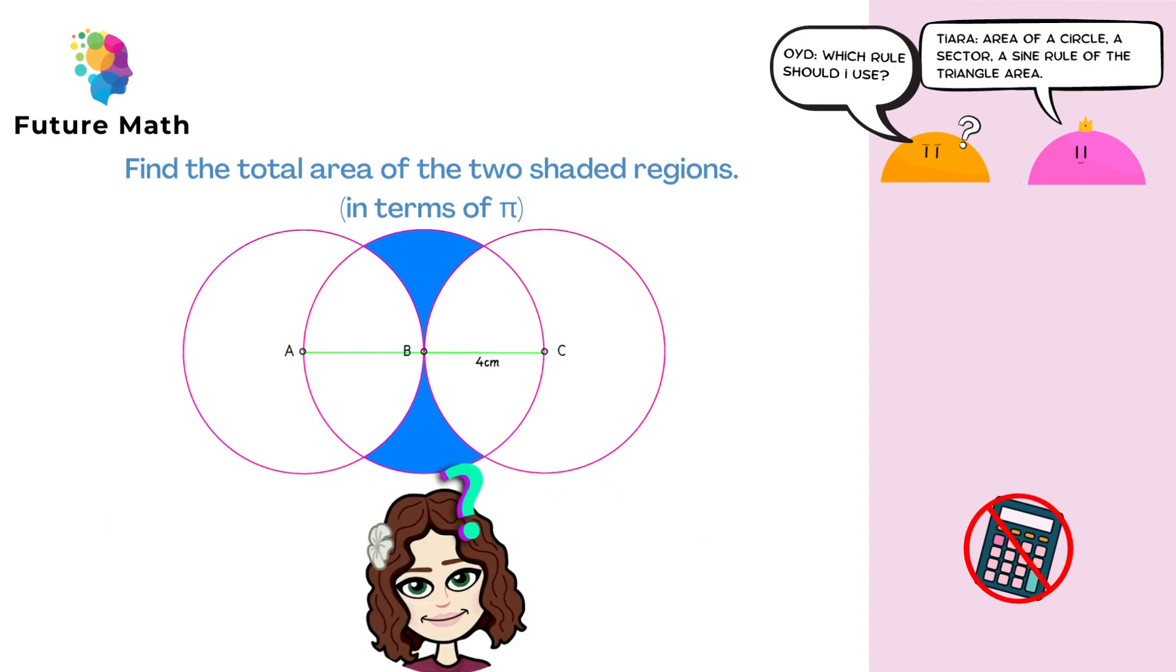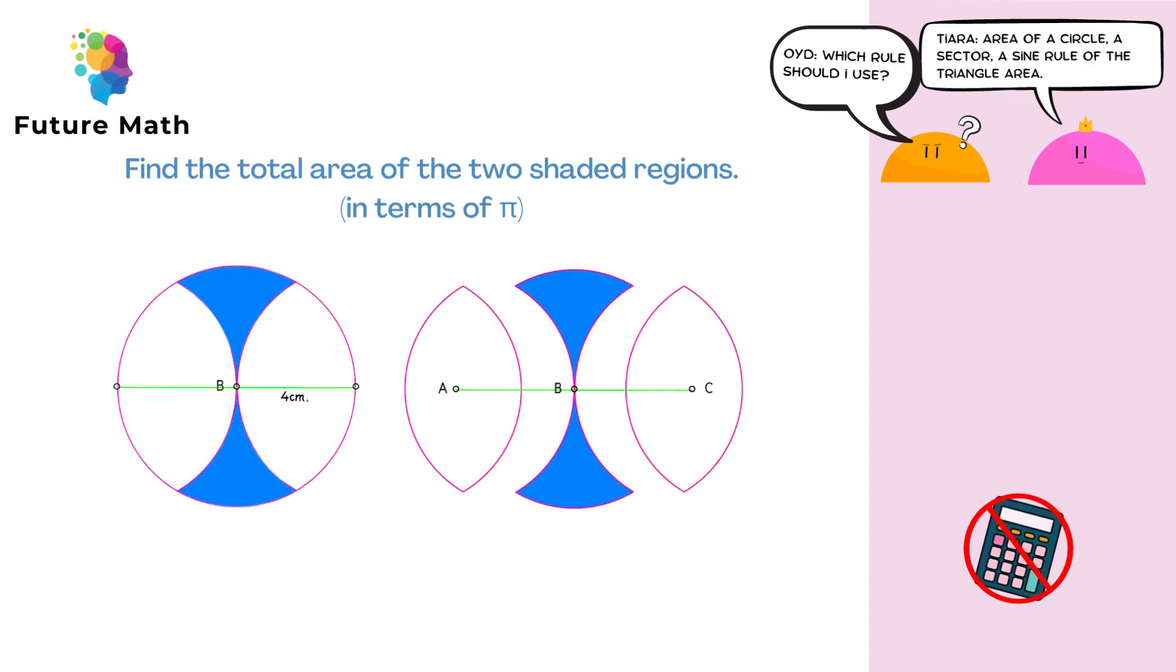There is more than one way to solve this question. We will do the area of the centre circle take away the two overlapping parts from it.